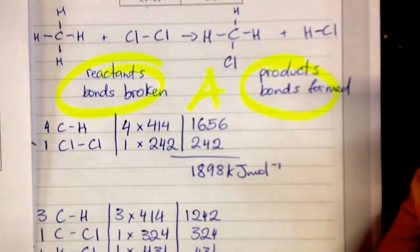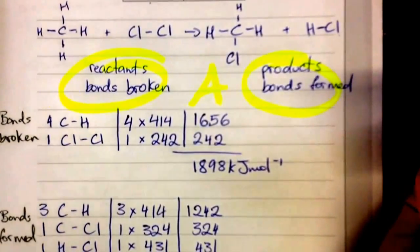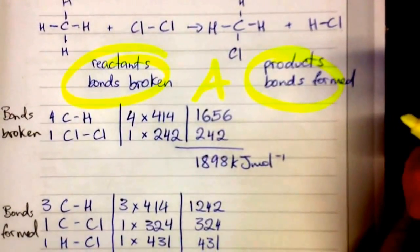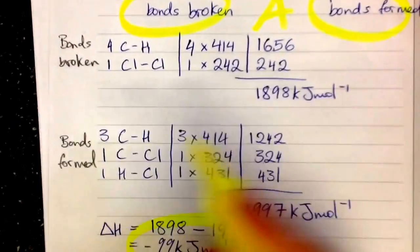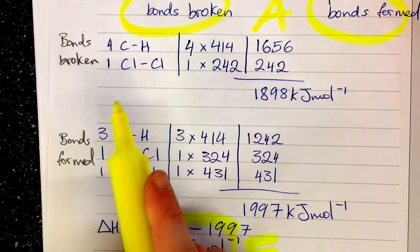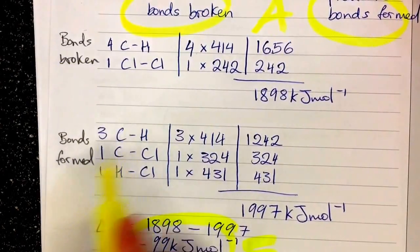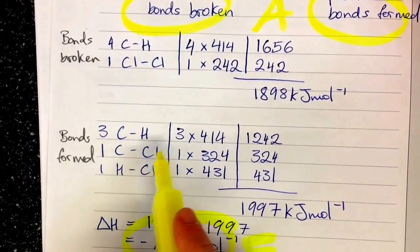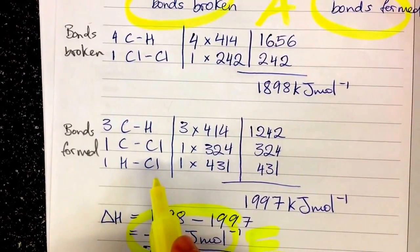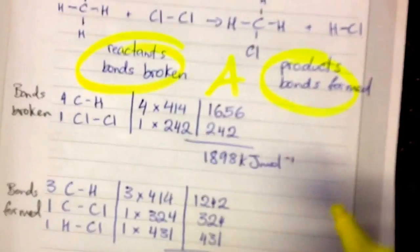So if in doubt, and you're not very good at this kind of thing, identify which bonds, so the 4 carbon to hydrogen, the 1 chlorine to chlorine bond, they're being broken, and bonds being formed being the 3 carbon to hydrogen, the 1 carbon to chlorine, and the 1 hydrogen to chlorine. That gets you achieved.